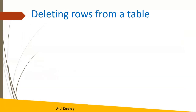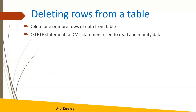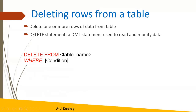Suppose we wanted to delete some rows from the table. It may be that we have 10 rows and we want to delete two or three rows based on some condition — we can do that as well. DELETE is again a DML statement used to read and modify data. The syntax is: DELETE FROM, which are fixed keywords, followed by the table name, then a WHERE condition — if the condition is satisfied, that particular row is deleted.